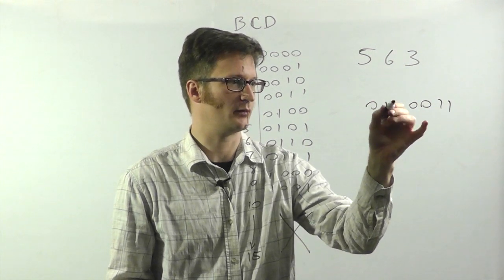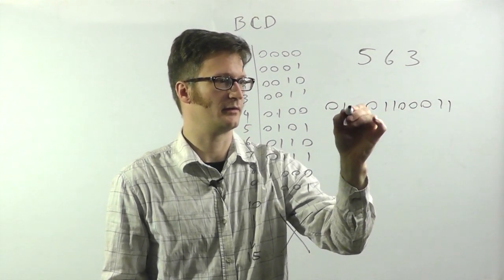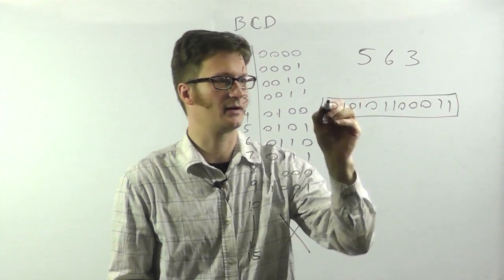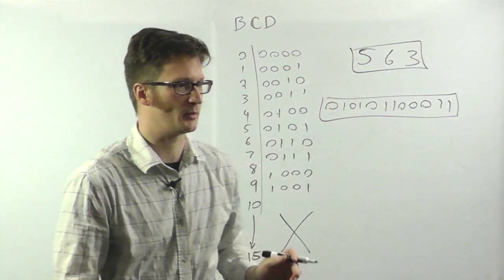6 is 0, 1, 1, 0. And 5 is 0, 1, 0, 1. Just like that, this is the binary coded equivalent of this decimal number.